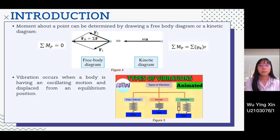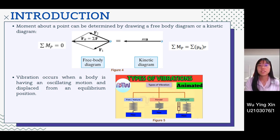For the moment about a point, it can be determined by referring to either a free body diagram or a kinetic diagram. The summation of moment at a point equals zero when referring to a free body diagram, while the summation of moment at a point equals the kinetic moment at that point when referring to a kinetic diagram. The difference between these two diagrams is shown in figure 4.